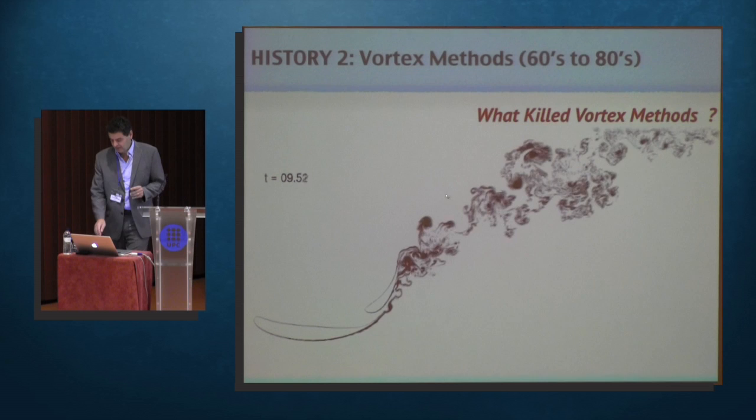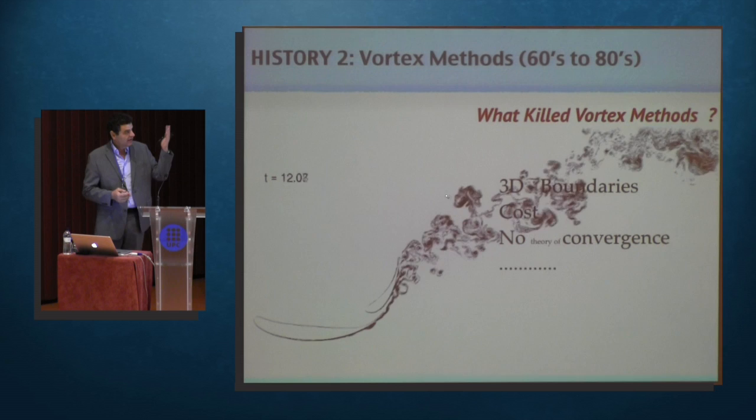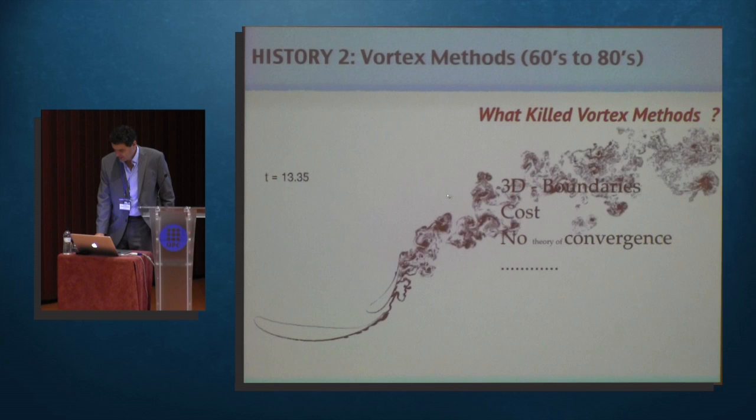They died a miserable death because people from finite differences started to come up and say, hey guys, you cannot do 3D, you cannot do boundaries well, your cost is very expensive, you scale like order n squared, and there was no theory of convergence. You would double the number of particles, you would get a different result.